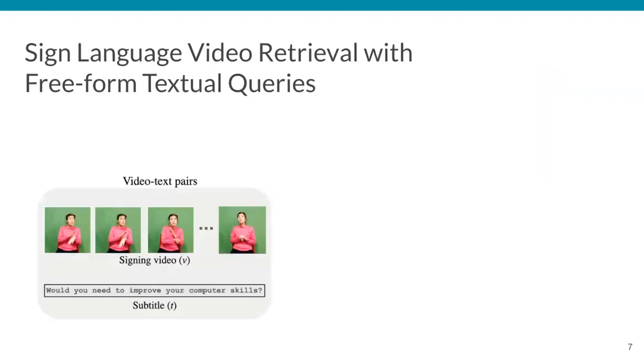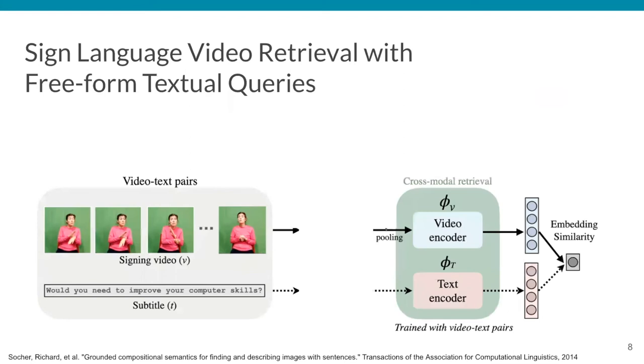In this work, we assume access to a parallel corpus of signing videos with corresponding written translations, and we aim to learn a pair of video and text encoders which map each signing video and text into a common embedding space, such that they are close if the text corresponds to the content of the video.